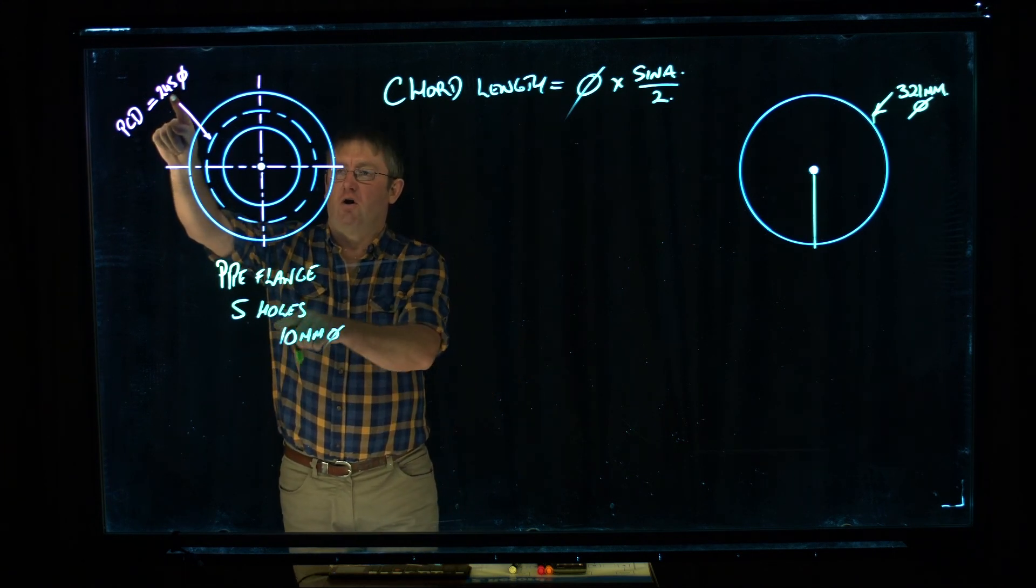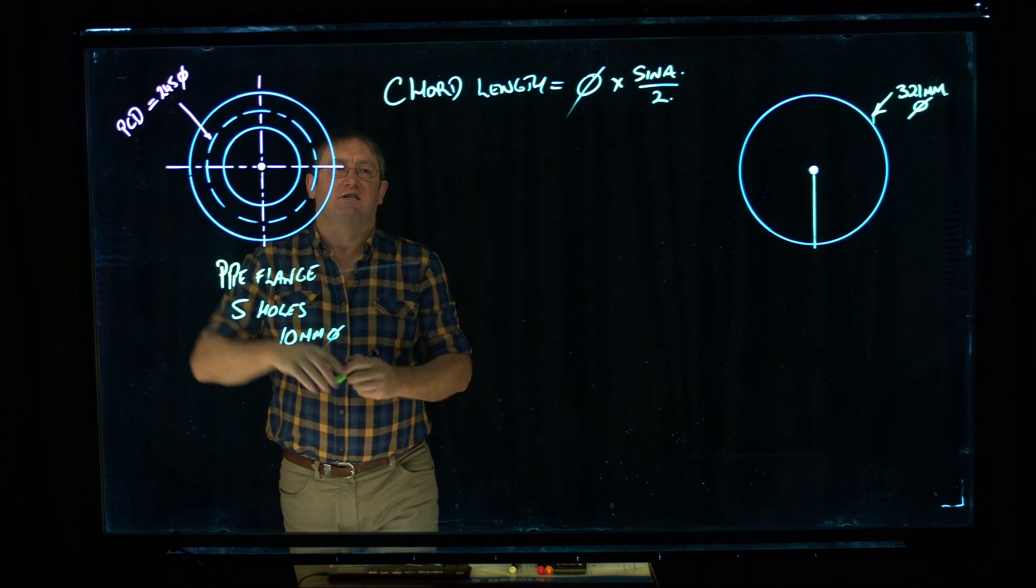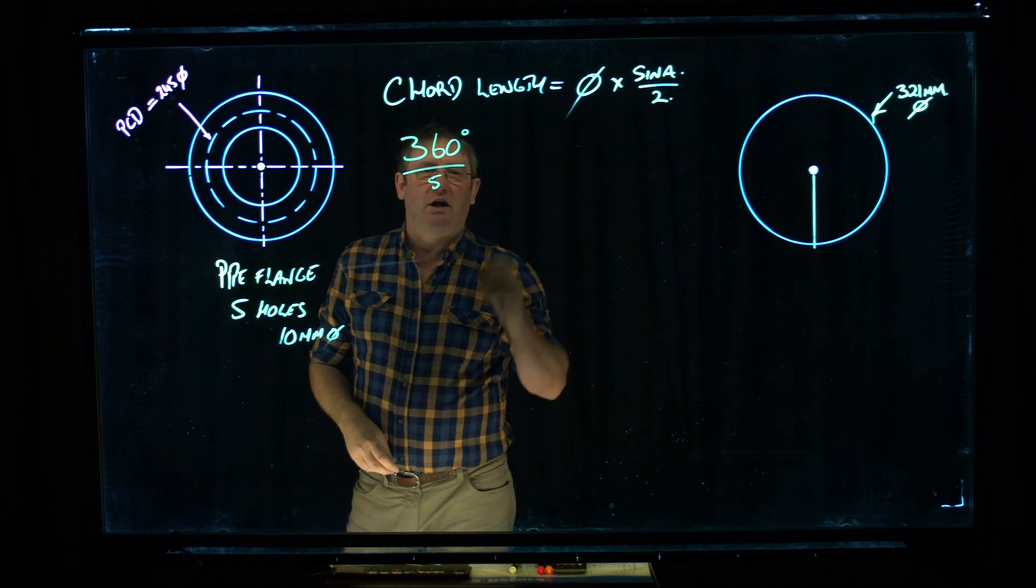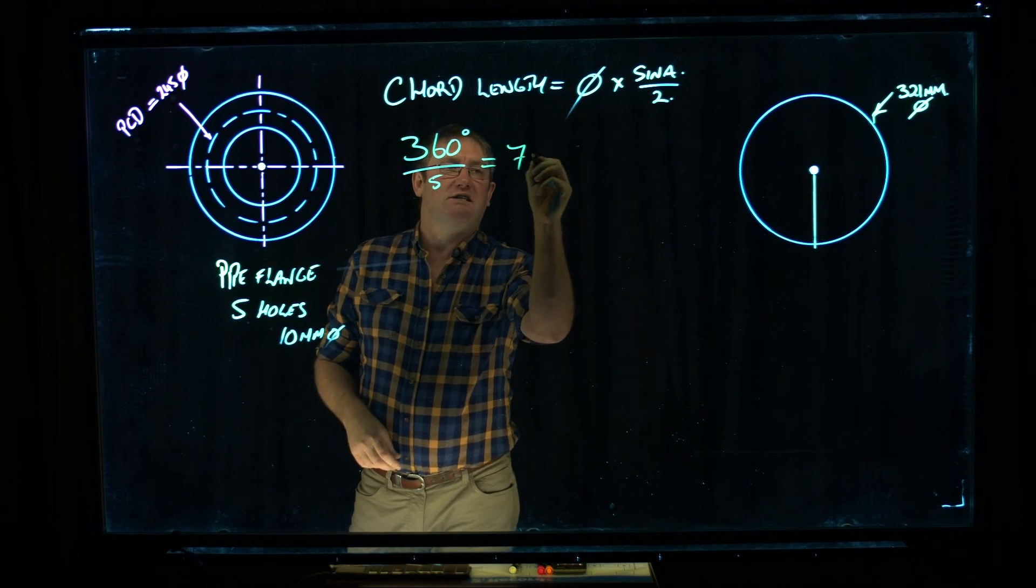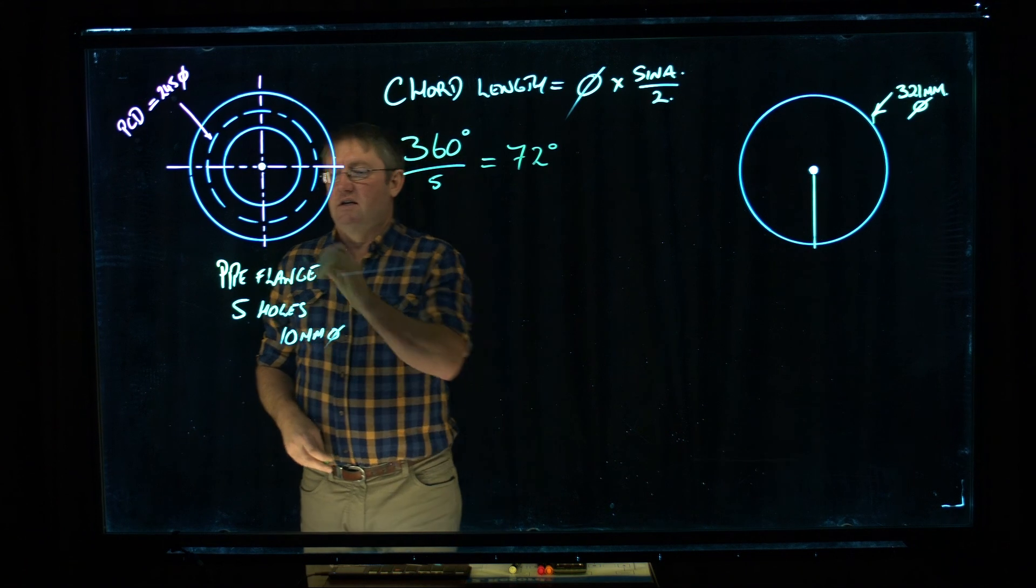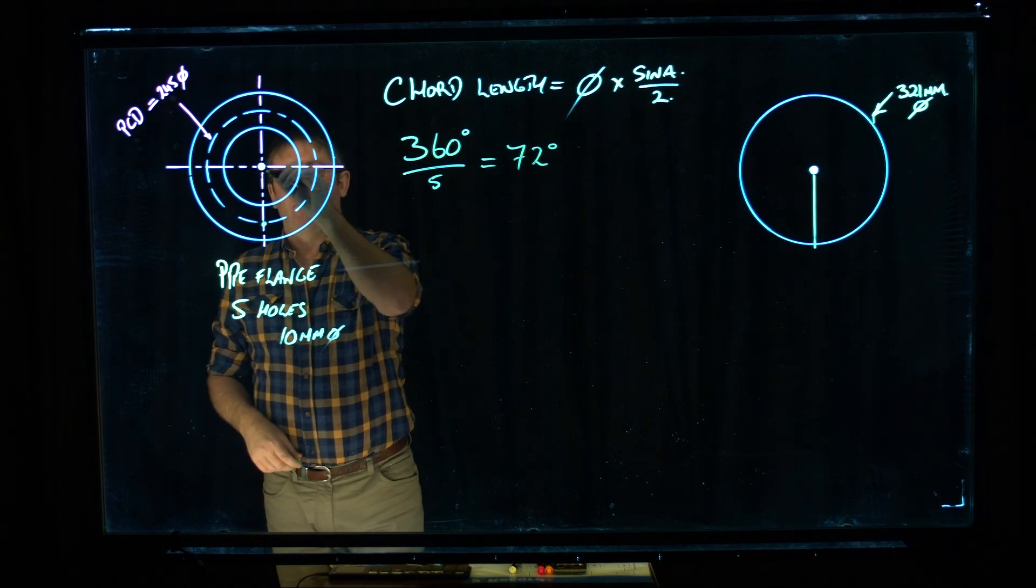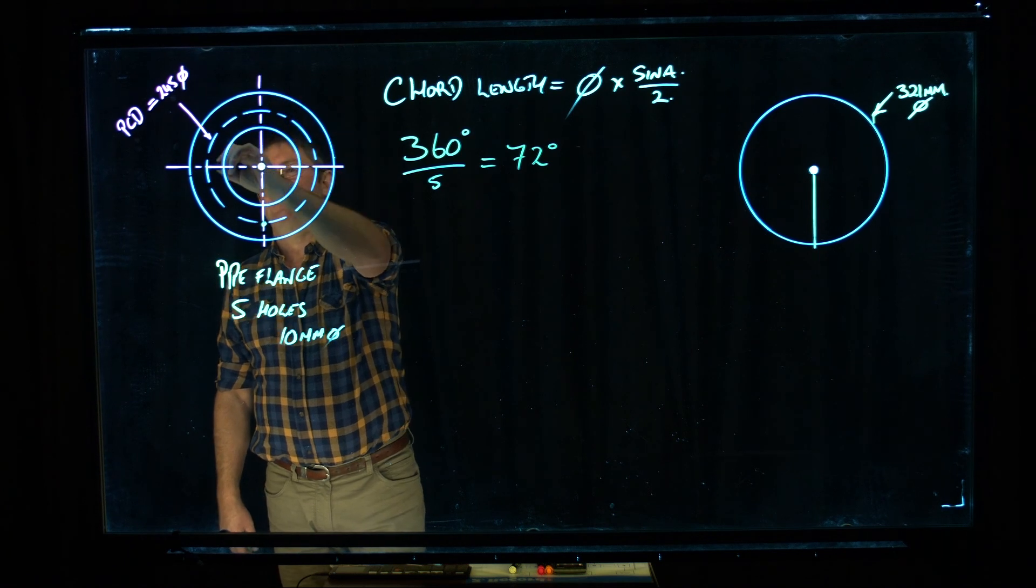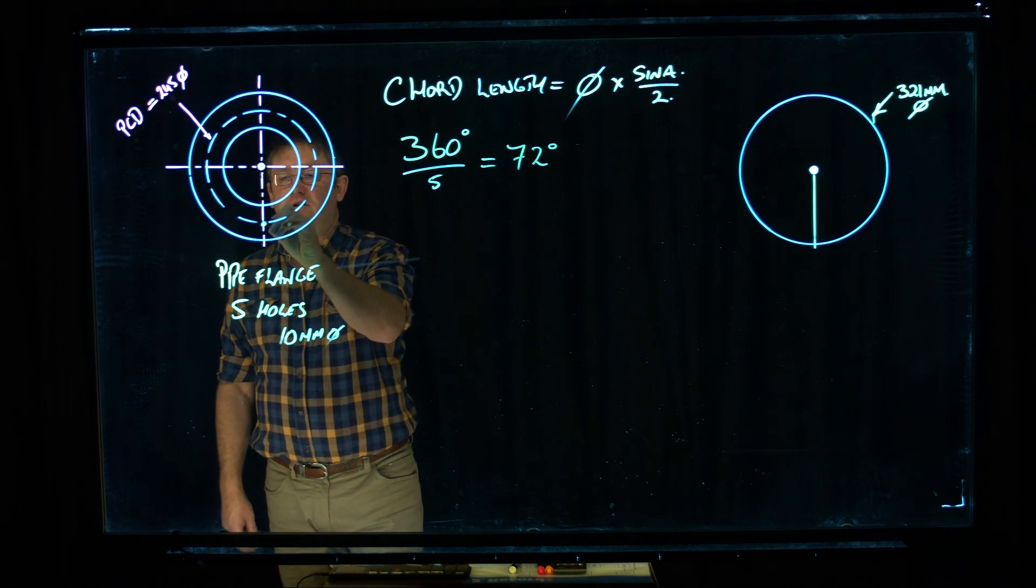So for five holes, I need to divide the 360 degrees. Divide that by five. If you do that on the calculator, you'll find it comes out at 72 degrees. So if I pick a start point, I'm going to go 72 degrees to the first hole. 72, 72, 72, and back to the original start point.